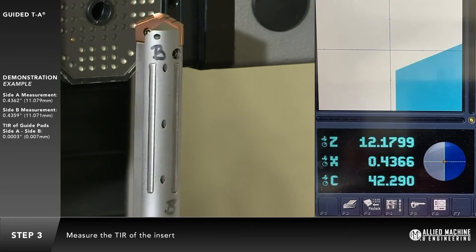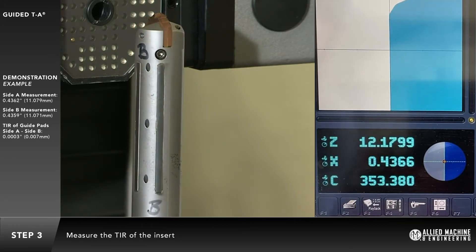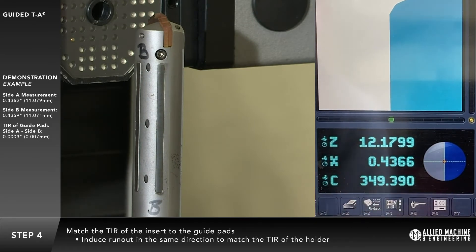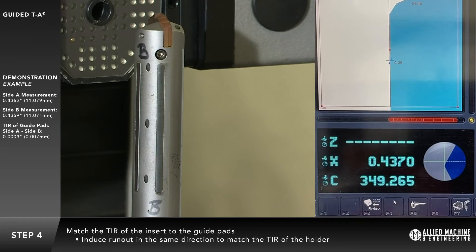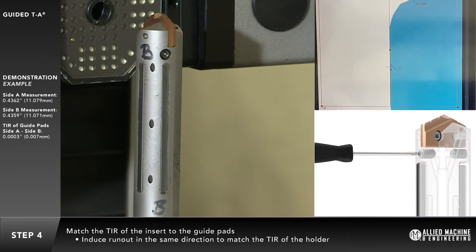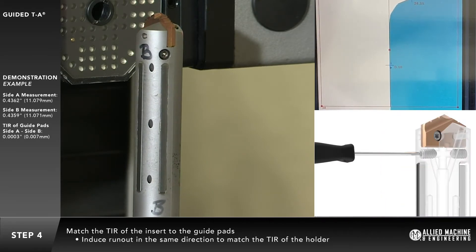Measure the TIR of the insert. Match the TIR of the insert to the guide pads. Induce 3 ten-thousandths of an inch run-out in the same direction to match the TIR of the holder. In metric, 0.007 millimeters.